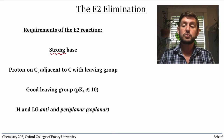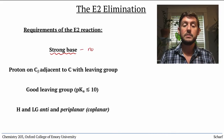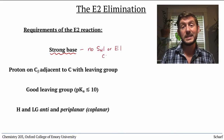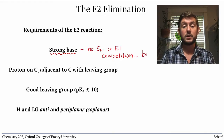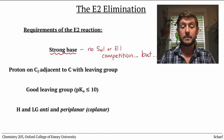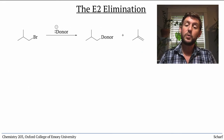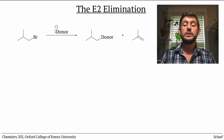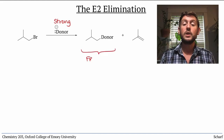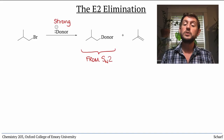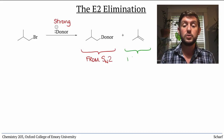The strongly basic conditions mean that SN1 and E1 reactions don't typically compete. But SN2 reactions might also occur if the leaving group is primary. For example, when isobutyl bromide is treated with a compound that's a strong donor of electrons — either a nucleophile or base — we see a mixture of products: one from the SN2 substitution, the other from E2 elimination.